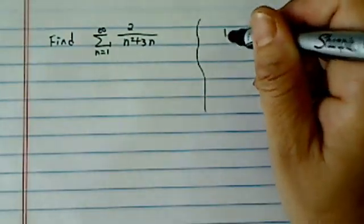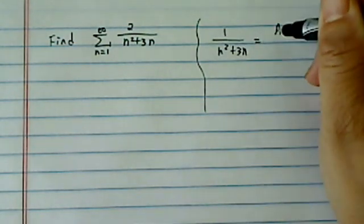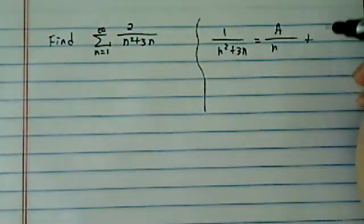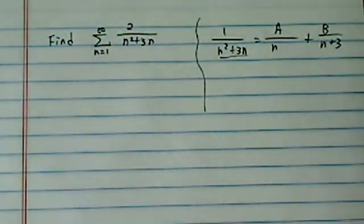One thing we're probably going to do right away is to use partial fraction, get this one into the form of A over n plus B over n plus 3. So all we did on the bottom is we factored here.